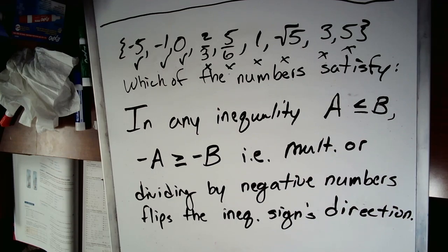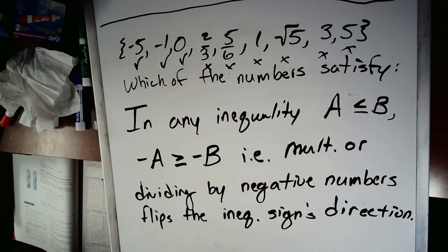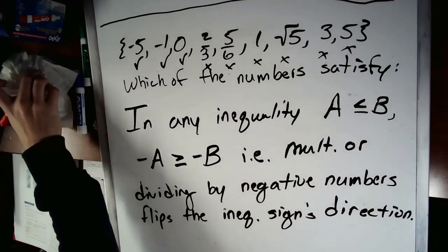Great question. In any inequality A less than or equal to B, if you multiply or divide both sides by a negative number, you have to change the direction of the inequality sign. That's because we're taking positive numbers and multiplying by negative makes them negative, so we're changing the direction of the real number line — the positives are no longer on the right, they're on the left, and the negatives are no longer on the left, they're on the right.